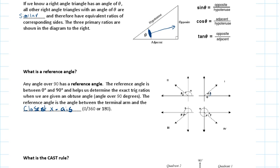If the terminal arm is in the second quadrant, the principal angle is theta and the reference angle is the acute angle between the terminal arm and the closest x-axis. If the terminal arm is in the third quadrant, the principal angle is that large angle and the reference angle is between the terminal arm and the closest x-axis.